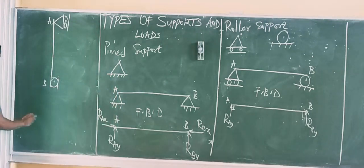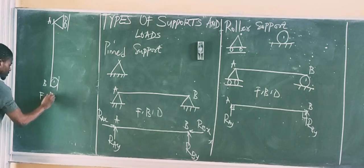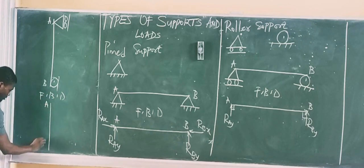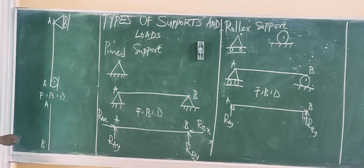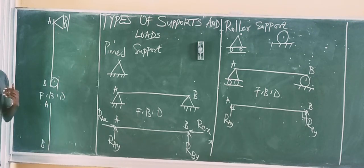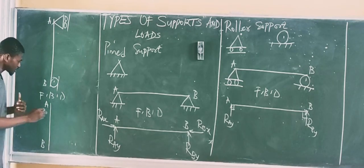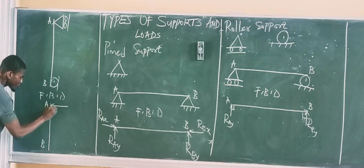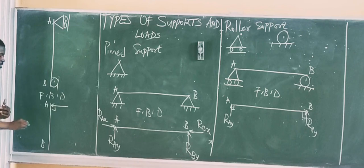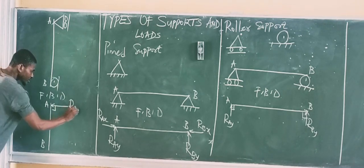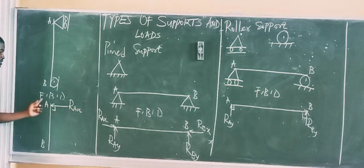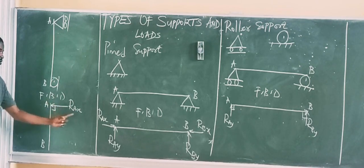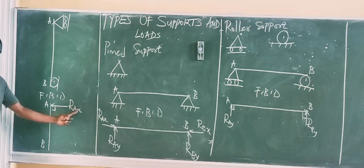The free-body diagram of the vertical beam will show reactions at 90 degrees to the surface. At point A, since the reaction is now horizontal, we simply call it R-A-X. At point B, the reaction must also be at 90 degrees to the surface, so we call it R-B-X.